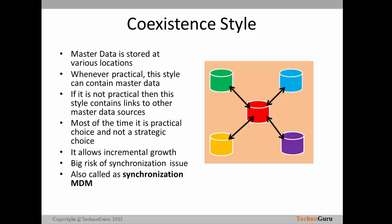The co-existence style allows incremental growth — you can add more domains as your business grows, which is a positive aspect. However, the big risk with this style is the issue of synchronization. If customer and product domains exist separately and are linked, the data can go out of sync. Products not purchased by the customer might appear as related, or purchased products may not show as a relationship. This data synchronization risk is significant with the co-existence style, which is also called synchronization MDM.